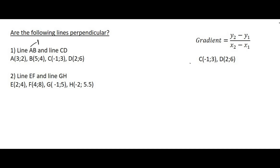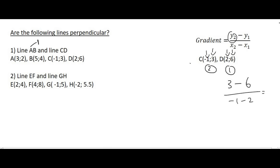Now for the gradient of CD. I'll call C point number 2 and D point number 1. The y value of point 2 is 3, minus the y value of point 1 which is 6, over the x value of point 2 which is minus 1, minus the x value of point 1 which is 2. Working this out gives a gradient of 1. So line CD's gradient is also 1. These two lines are not perpendicular because 1 times 1 equals 1, not minus 1.